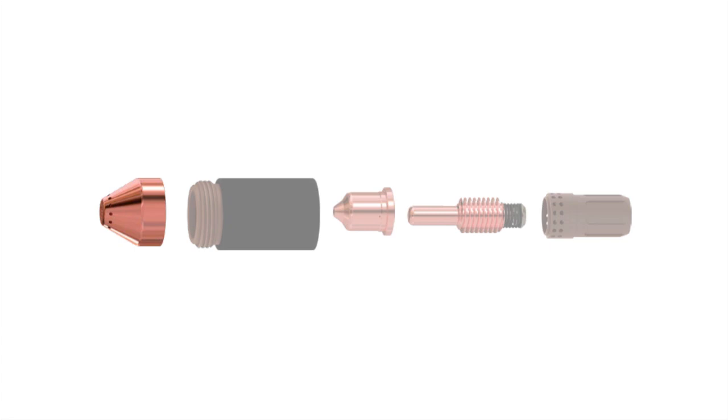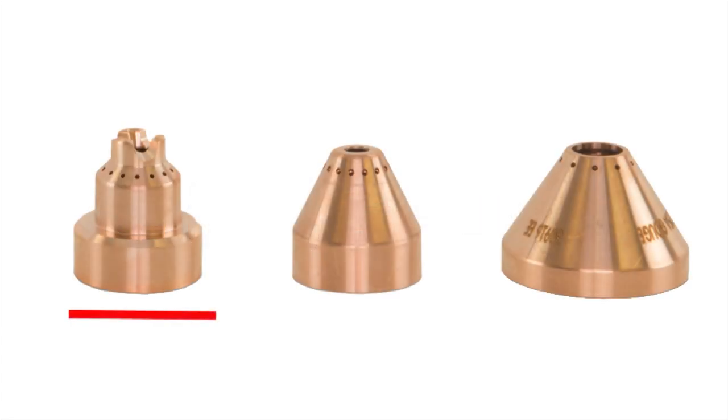Shield shapes vary by the application they are designed to address. There are a few different types of Powermax shields. Drag shields, which are isolated, can be dragged on the plate and against a template or guide. Mechanized shields are available for automated applications. Additionally, there are different shields for fine cut, marking, and gouging applications.